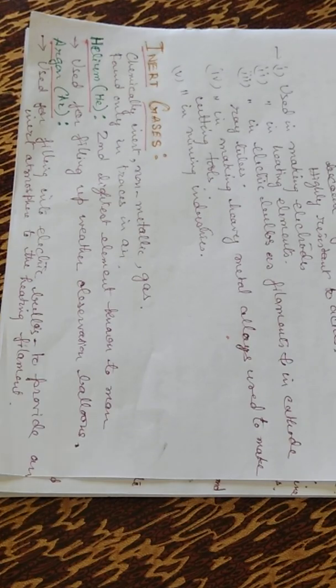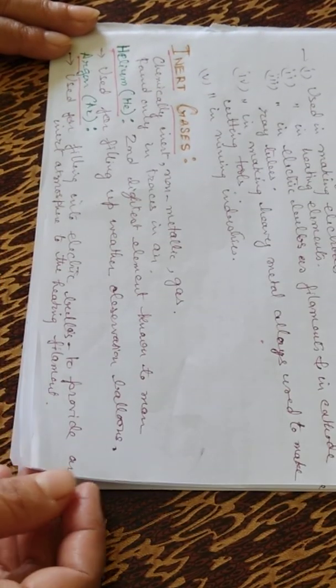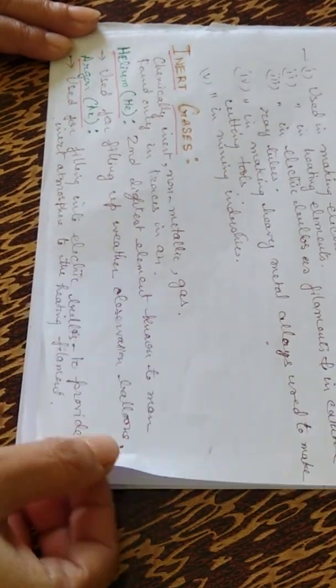Argon. It's used for filling into electric bulbs to provide inert atmosphere to a heating element.